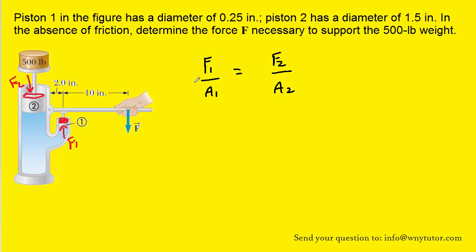We can solve for F1 by multiplying both sides by A1. We can then replace the areas with pi r squared. The pi's will cancel and we're ready to plug in our known values.